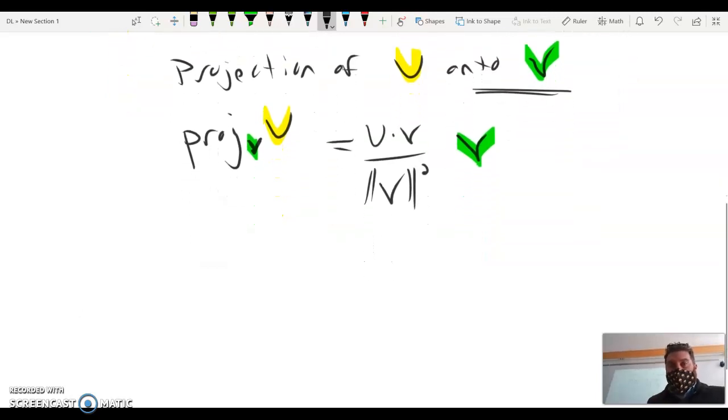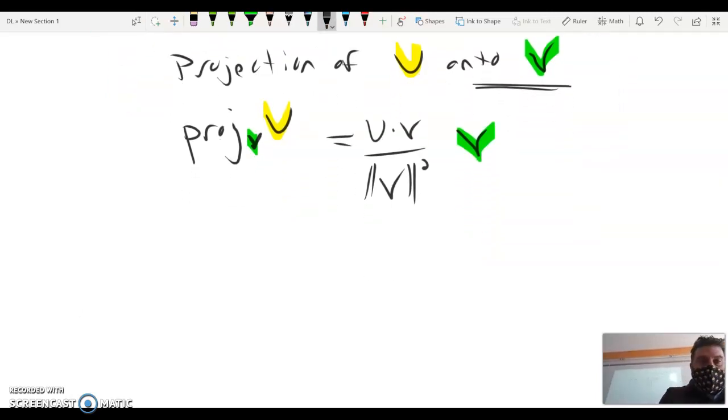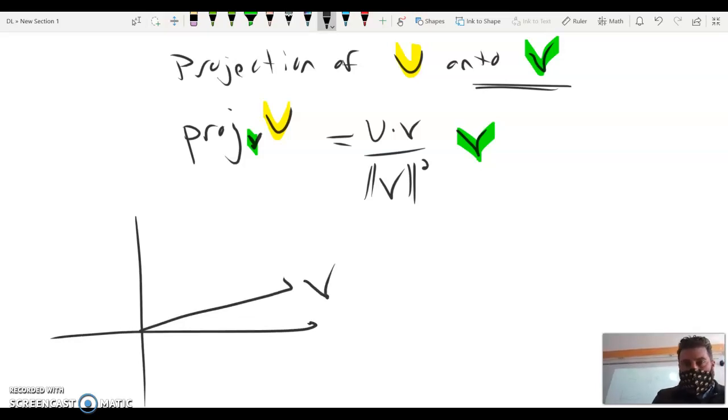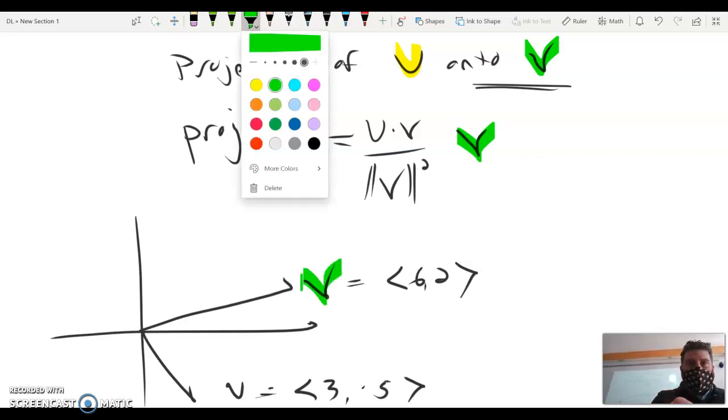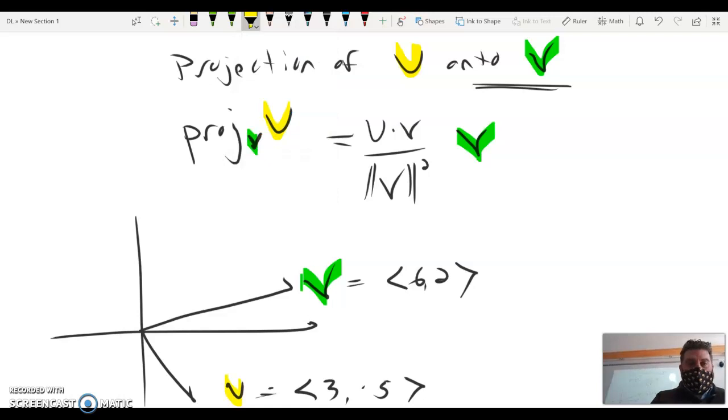So let's use those same two vectors that we just used. And we have 6, 2. Call that v. And here is u. And that's 3, negative 5. So what I'm going to think of is, what is the projection of u, u is the vector down low, onto v. V is this green vector. So it's going to land, the projection of u onto v, it's going to land on v. Or perhaps in the opposite direction, same thing.